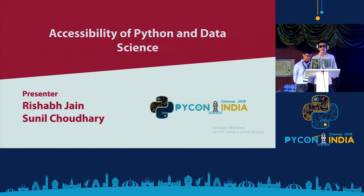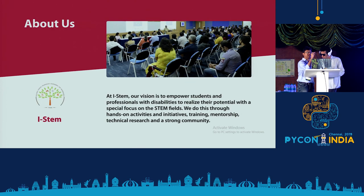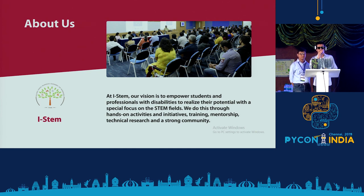My name is Sunil Chaudhary, currently working at Morgan Stanley, and I've been programming for the last five years. And hi everyone, this is Rishabh Jain — I'm currently a student pursuing my integrated master's degree in applied mathematics from IIT Roorkee, and I'll be joining Microsoft as a data scientist next year.